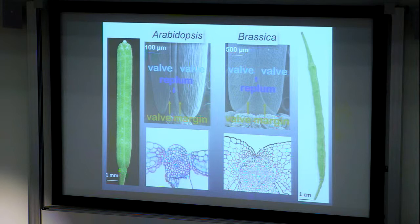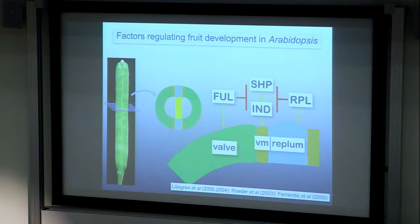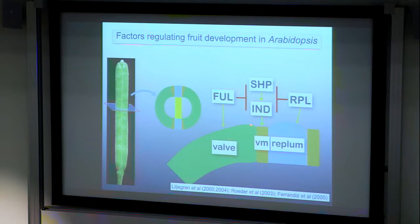A lot of the genetic factors involved in setting up the Arabidopsis fruit are already known, mainly based on work in Marty Yanofsky's lab at UC San Diego. We know, for instance, that there are valve margin identity factors — shatterproof and indehiscent, or SHP and IND for short — that are responsible for specifying the valve margin cells. But the activity of these genes is restricted from both sides: the valve side by a gene called fruitful and the replum side by a gene called replumless, to really restrict activity to the valve margin cells.